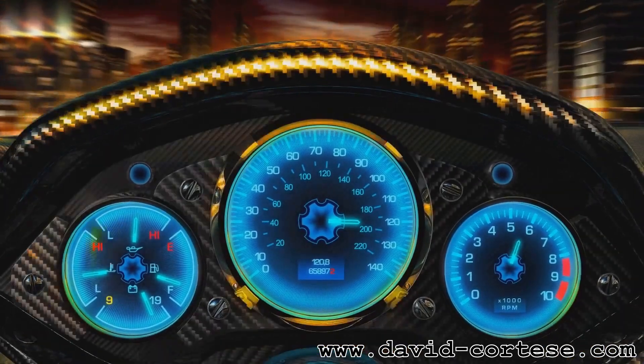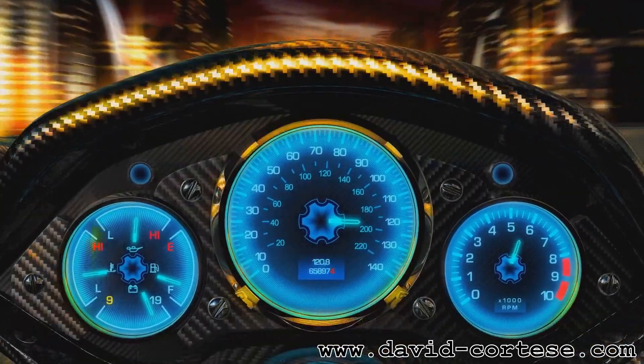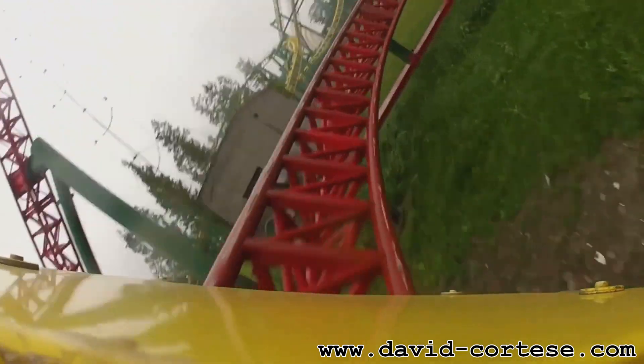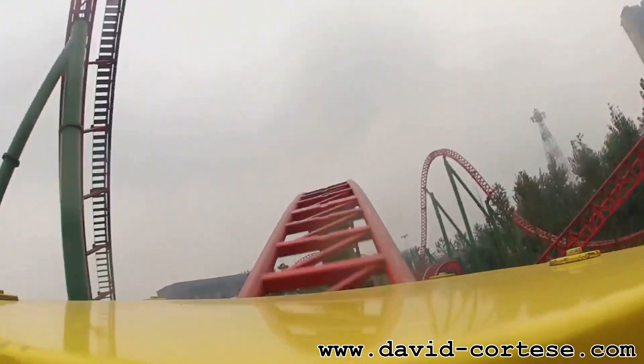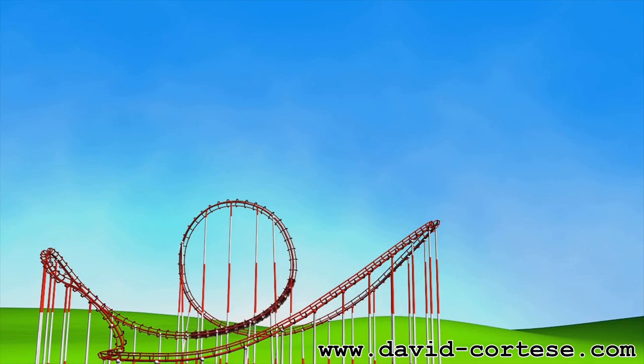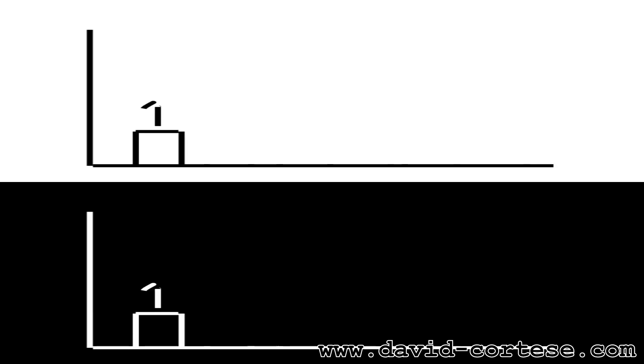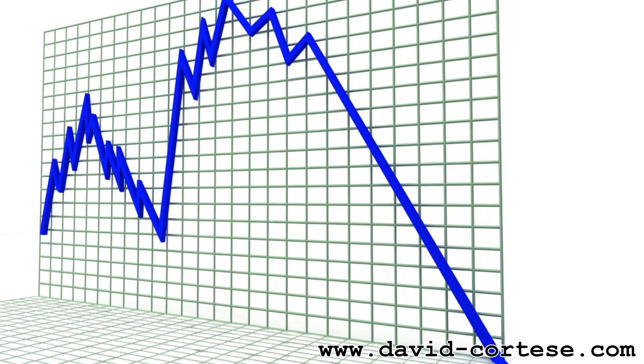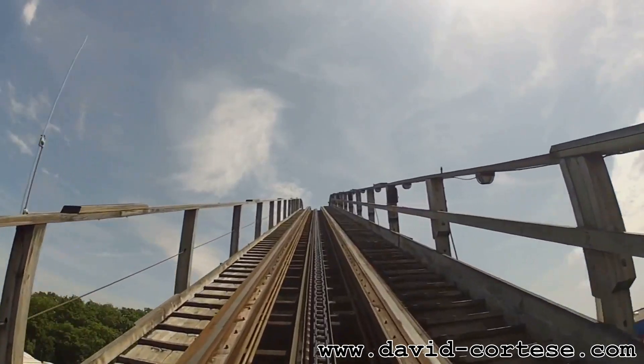For example, imagine you're on a roller coaster. The derivative of your position function would tell you your velocity at any given point in time. If the derivative is positive, you're moving upwards. If it's negative, you're moving downwards. And the steeper the slope of the roller coaster, the greater your velocity.